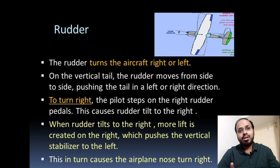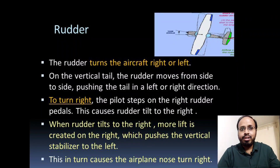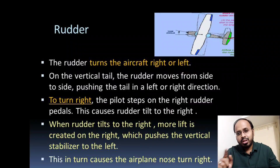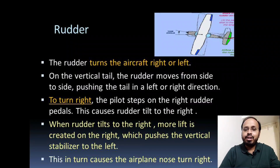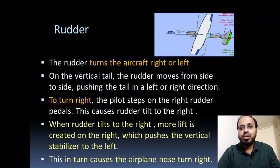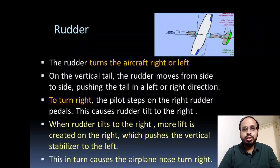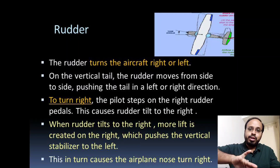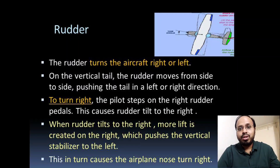The rudder turns the aircraft right or left. On the vertical tail, the rudder moves from side to side, pushing the tail in the left or right direction. To turn right, the pilot steps on the right rudder pedal, causing the rudder to tilt to the right. When the rudder tilts right, more lift is created on the right side, pushing the vertical stabilizer to the left, which causes the aircraft nose to turn right.